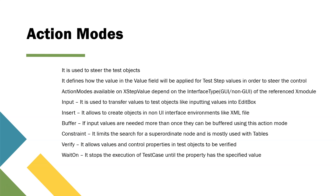Then there is wait on — it stops the execution of the test case until the property has the specified value. We have seen an example but we'll look at more examples of the wait on action mode. The last action mode is select — it allows you to select specific nodes and is quite useful for steering tables. Tosca automatically uses the select action mode whenever you are steering through table rows and columns.